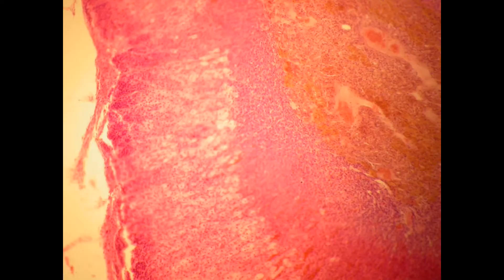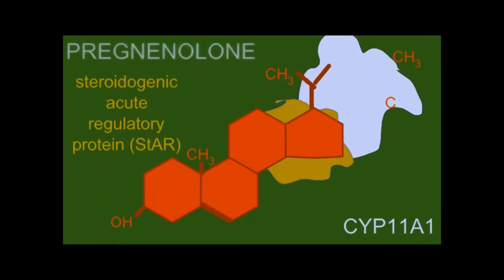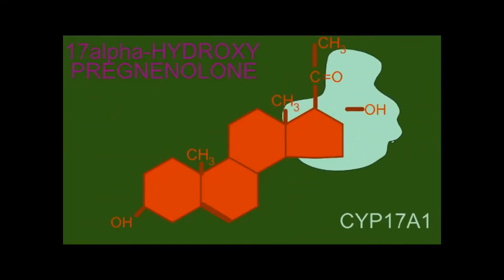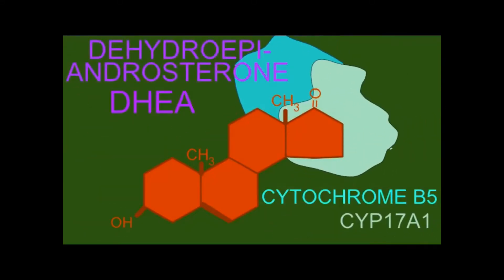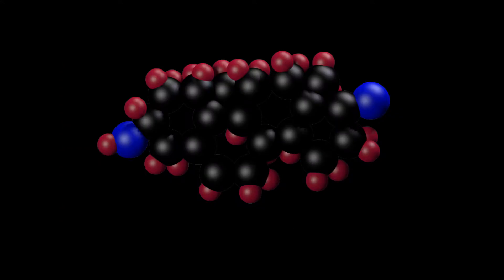There are also glands which rest above the kidneys known as adrenal glands, and adrenal glands make a number of steroid hormones which function as androgens.